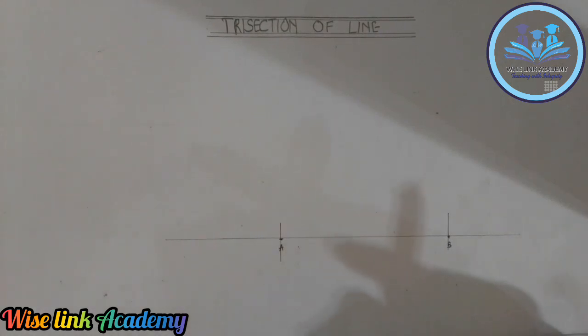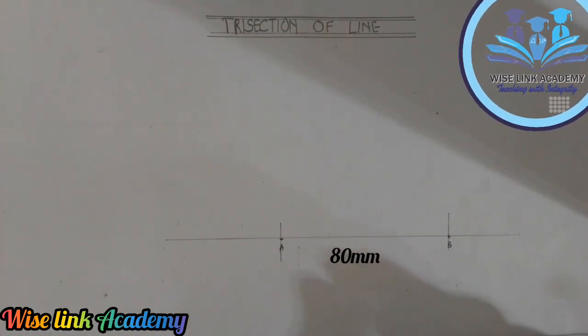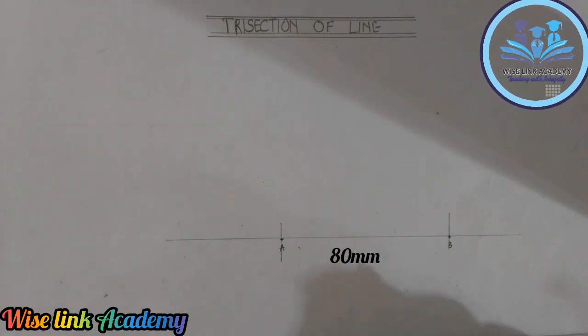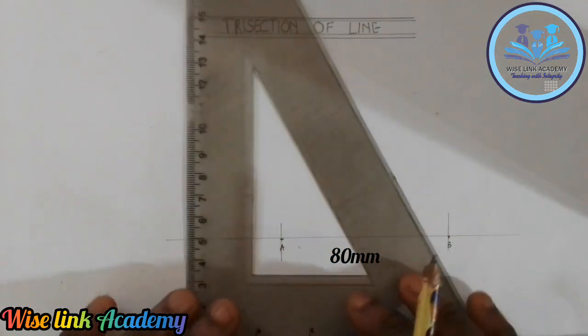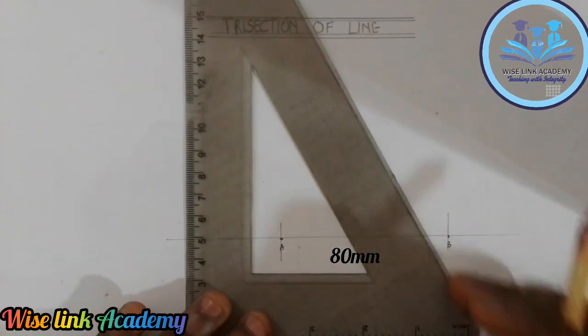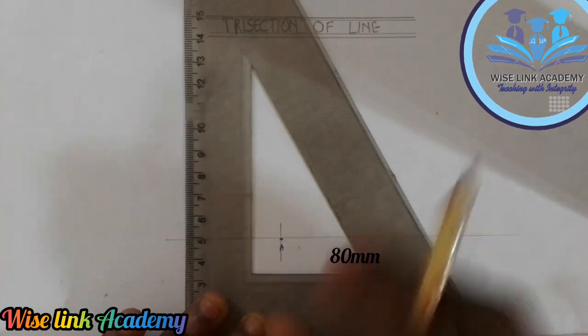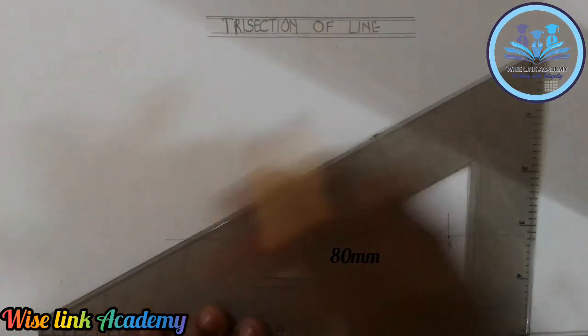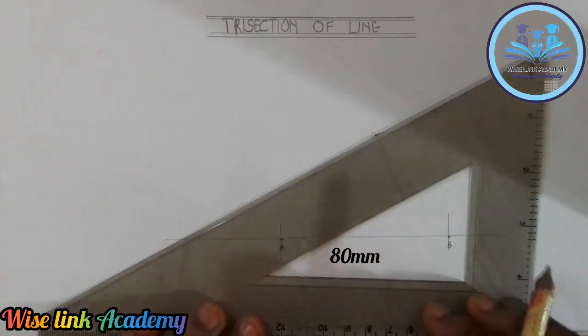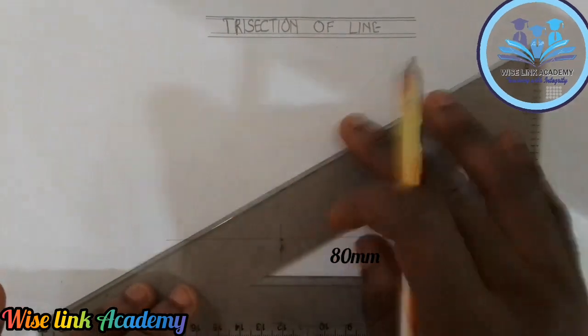Next up, the next thing I will do is to take my set square. This set square, if I take it this way it is 60 degrees, while this way is 30 degrees. As you can see, I have proved why this is 60 and 30 in my previous videos.